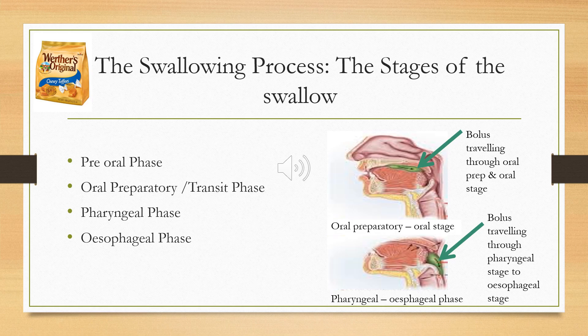During the pre-oral phase you need good eyesight, you need to be awake and alert, you need good dexterity and be able to use your hands. You need to be able to judge the size of the food and how heavy it's going to be before you put it into your mouth. Then we go on to the oral preparatory phase.